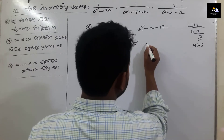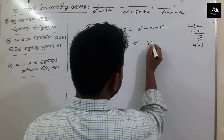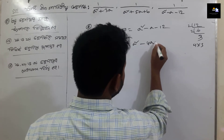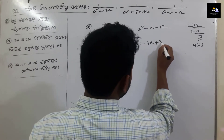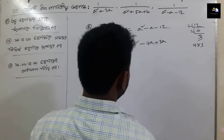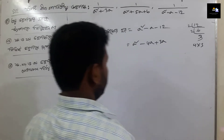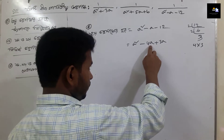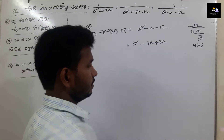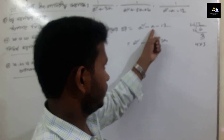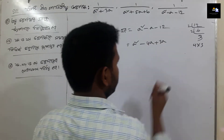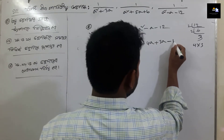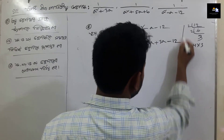We can see 4a plus 3. If we put minus 4 and 3, we have a dot. We have 3 and 4, so we have a minus 12.